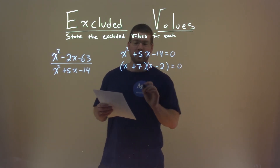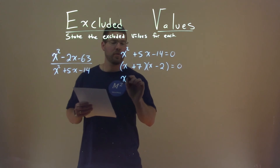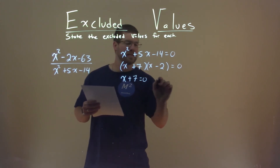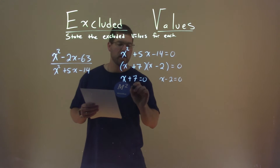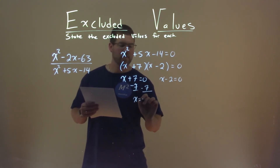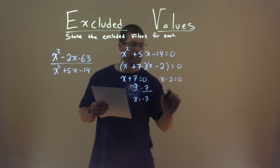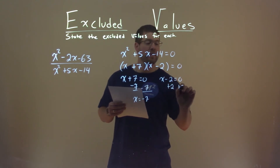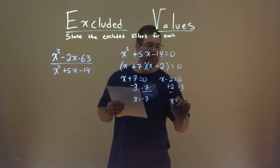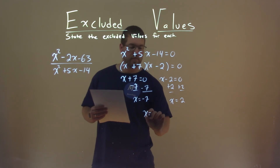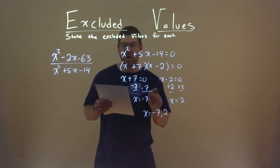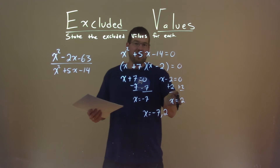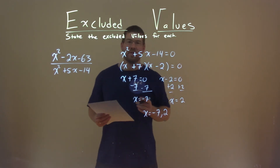Now that it's in this factored form, we can set both parts equal to 0 to solve. We subtract 7 from both sides here and x equals negative 7. We add 2 to both sides on this one and x equals positive 2. So negative 7 and positive 2 are our excluded values.